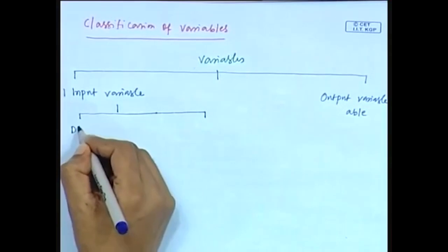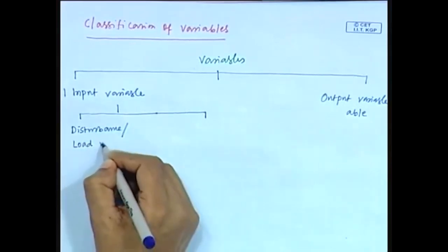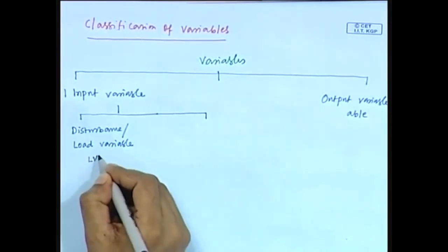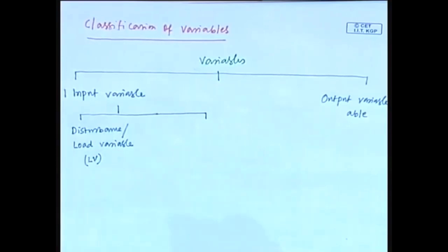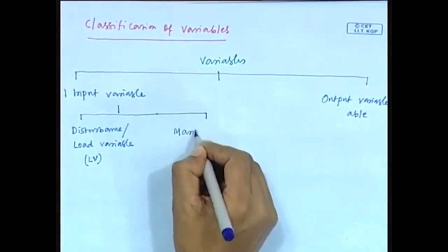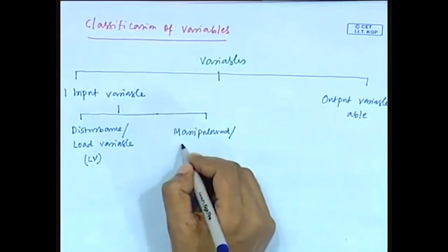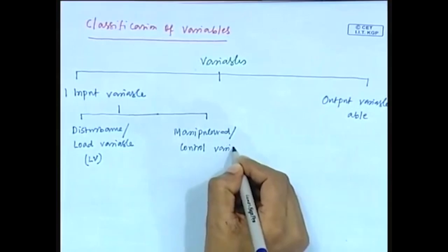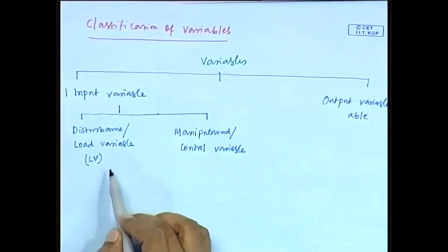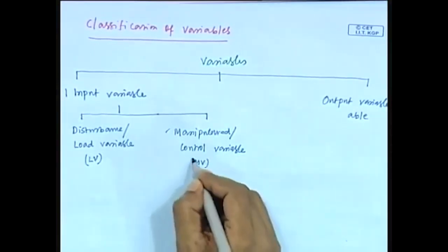The first type of input variable is the disturbance or load variable. The second type of input variable is the manipulated variable, also called control variable, represented by MV.